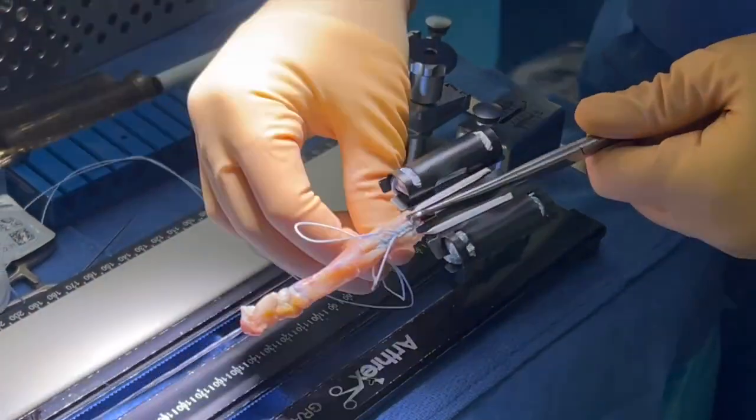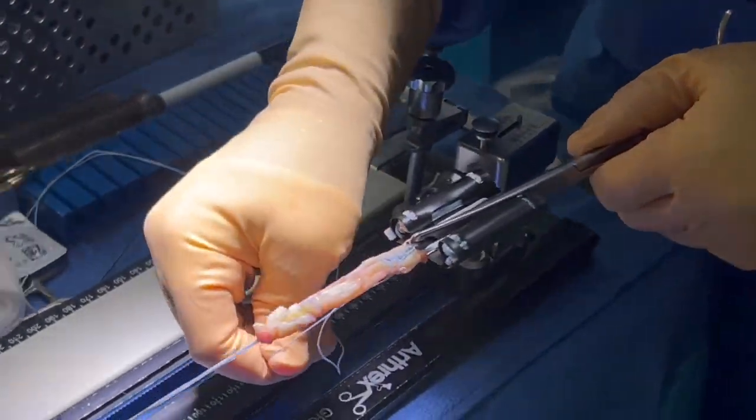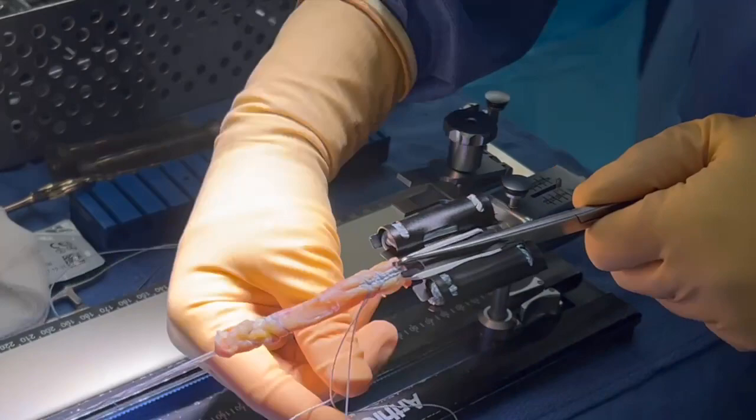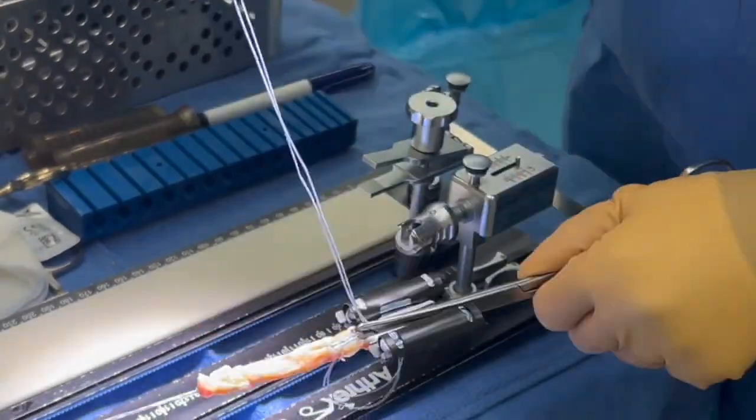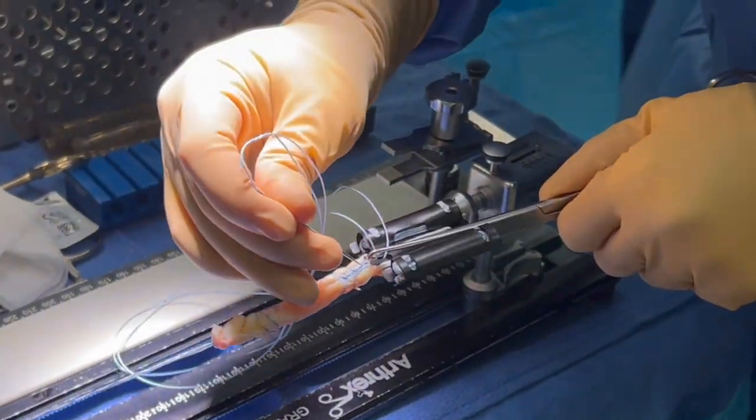This is using the newer Tightrope 2, the upgraded version. You can see we want to make sure that it's flush each time we're passing through. Then we pass through the center of the device.